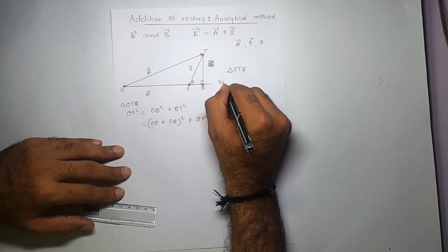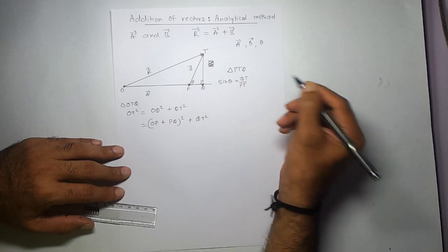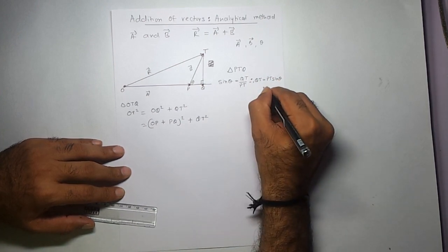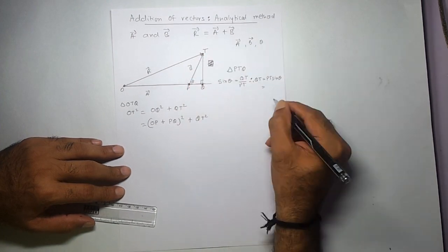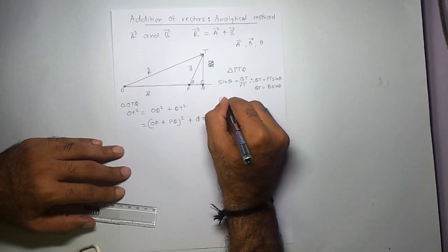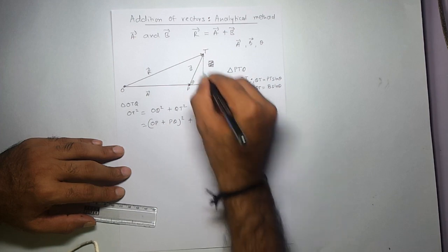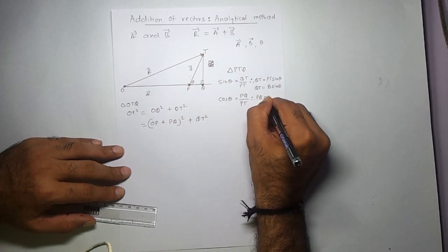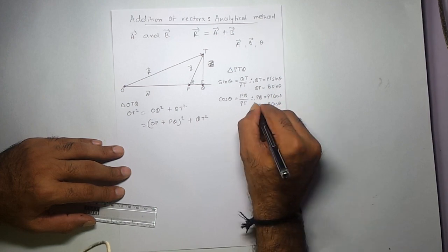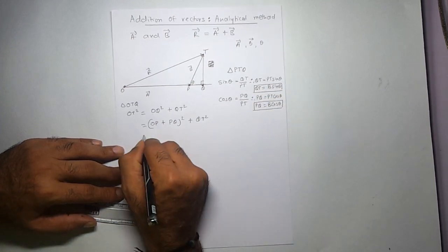Now in triangle PTQ, this angle is theta. So sine theta equals opposite over hypotenuse, which is QT over PT. Therefore QT equals PT·sine theta. Since PT is the magnitude of vector B, QT equals B·sine theta. And cos theta in triangle PTQ gives PQ over PT, so PQ equals B·cos theta. I'm noting these to use later.